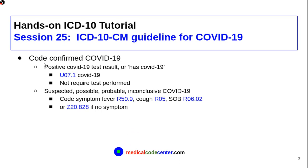The first rule is to code only confirmed COVID-19 cases. If the patient tested positive for COVID-19, or the document simply states the patient has COVID-19, you code U07.1, the COVID-19 code. It is not required to have a test performed. If the patient is suspected, possible, probable, or inconclusive for COVID-19, you only code the symptoms: fever, cough, or SOB — shortness of breath.